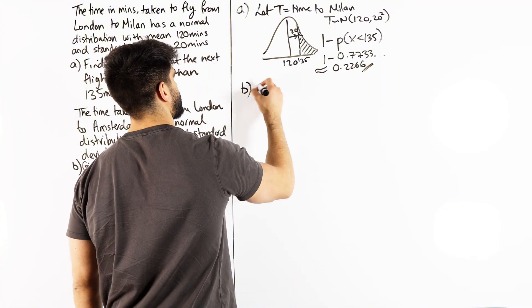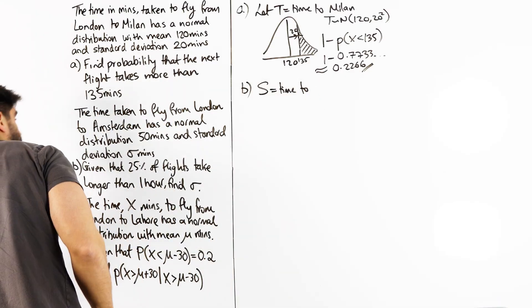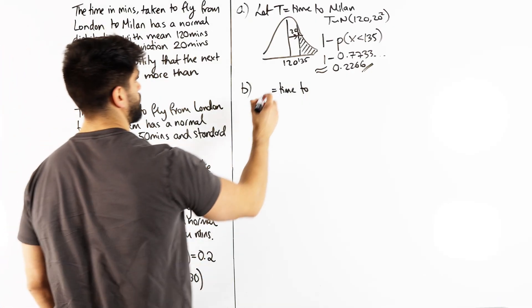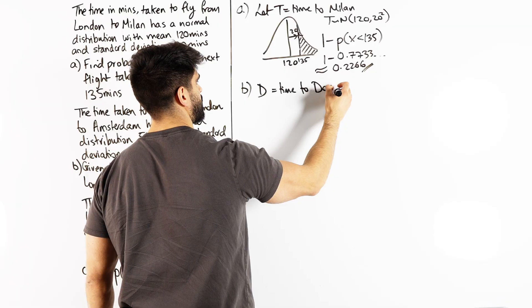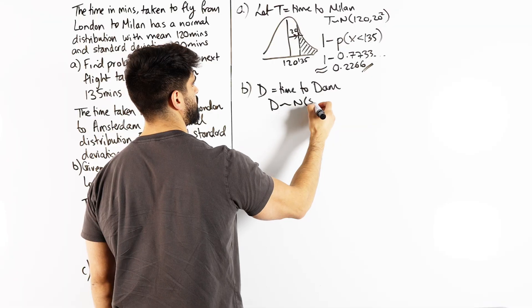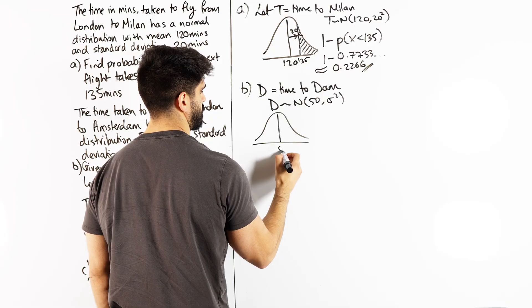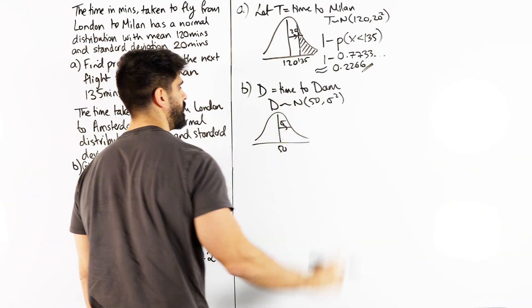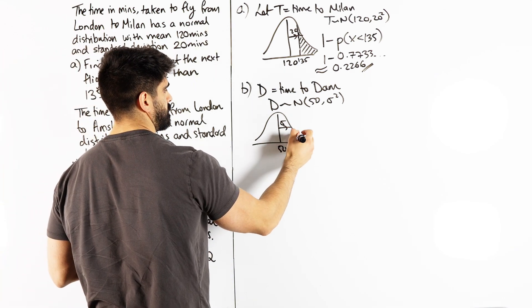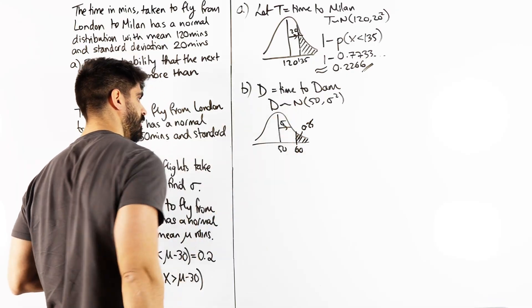Now I've used t already. Let's just use s. Time to, actually let's use d, because we don't say Amsterdam, we say dam, if we're going to be informal about things. Time to dam. So d is normally distributed N(50, σ²). Doing our sketch. 50, sigma. More than an hour. So an hour is 60 minutes. More than that is 25%.